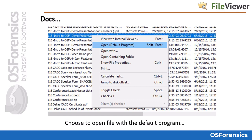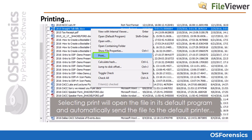In addition to the OSF file viewer, you can also choose to open a file with the system's default program, as shown here through the right-click menu. You can also choose to print a file to your local printer or print to PDF if you have an installed PDF printer.